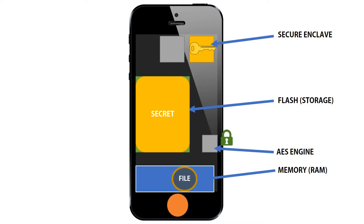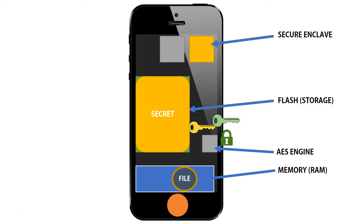As a result, the secure enclave and the AES engine negotiate their own key when the phone starts up, so any communication between the two is encrypted in itself.